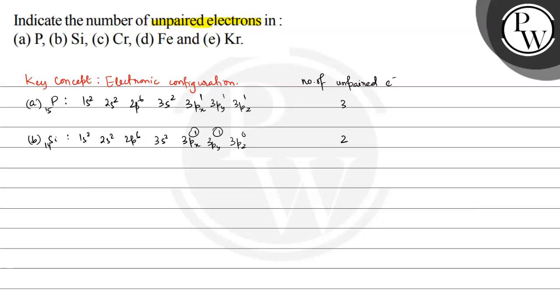Now let us talk about chromium. This has atomic number 24. So electronic configuration would be 1s2, 2s2, 2p6, 3s2, 3p6, 4s1, 3d5. And if we expand this 3d5...